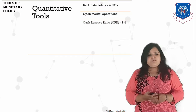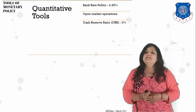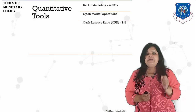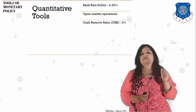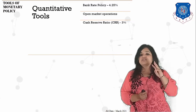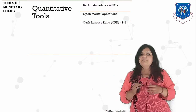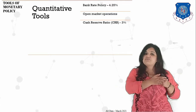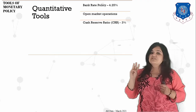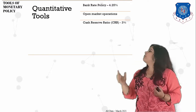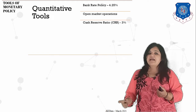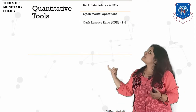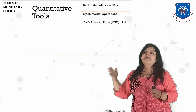The next quantitative instrument is cash reserve ratio (CRR). In India, as of March 2021, the CRR is 3%. This is the amount each bank must maintain in the form of cash at the end of the bank day — it must hold 3% of the total deposited amount in cash. Only the remaining money is available for loans. During inflation, RBI increases the CRR so banks must reserve more and give out fewer loans.